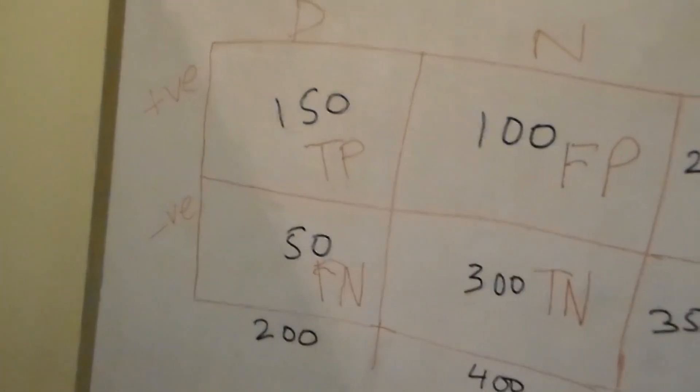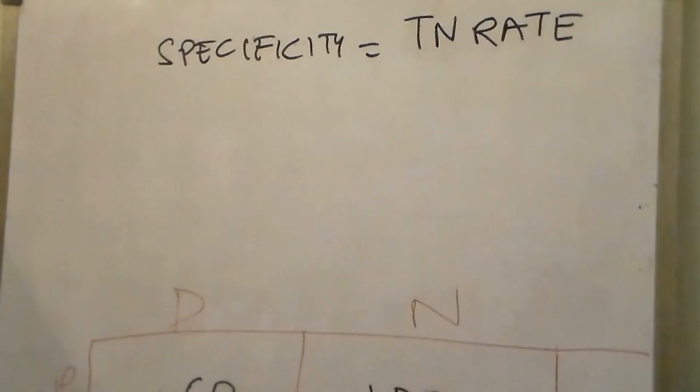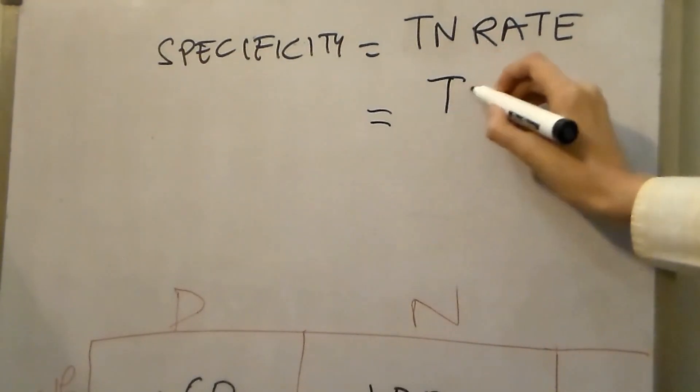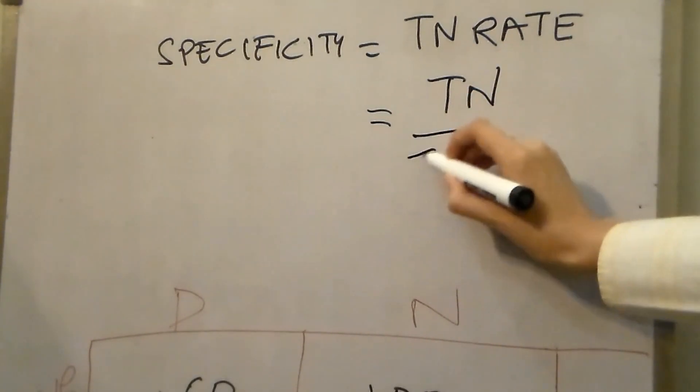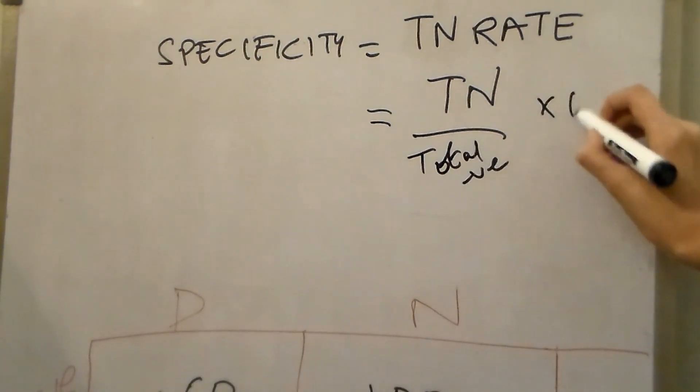So that is the true negative divided by the total negative. Let's write that down right here. It's the true negative divided by total negative, multiplied by 100.